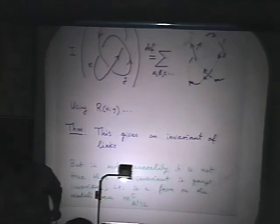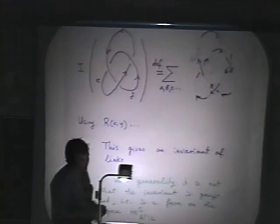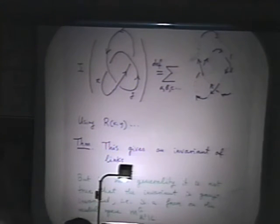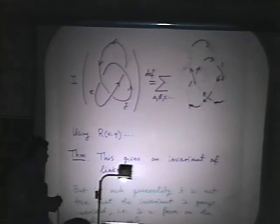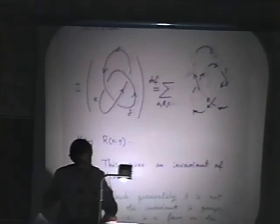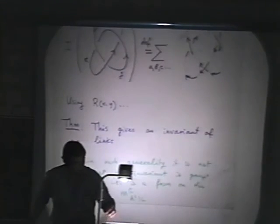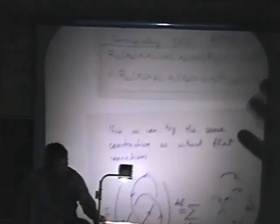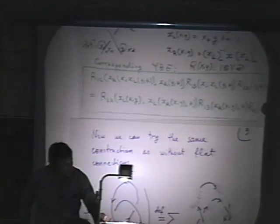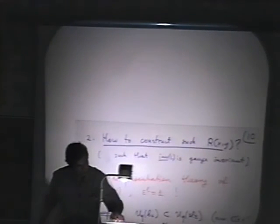I have to finish this talk in 10 minutes. The question I didn't address is: where to find such R's? How to find functions R(X,Y) that satisfy this functional equation? It turns out the answer is very simple: you can use the same quantum groups, but you should specialize the parameter q to a root of unity. That's the answer.